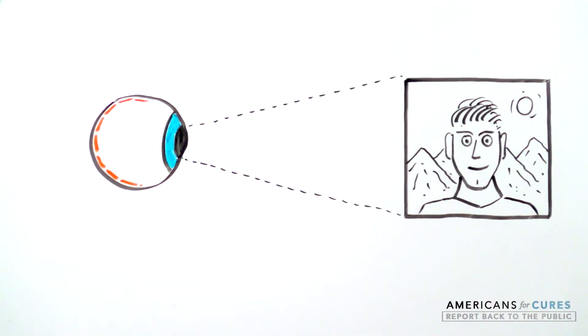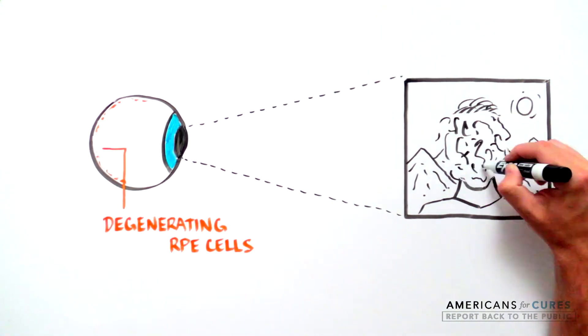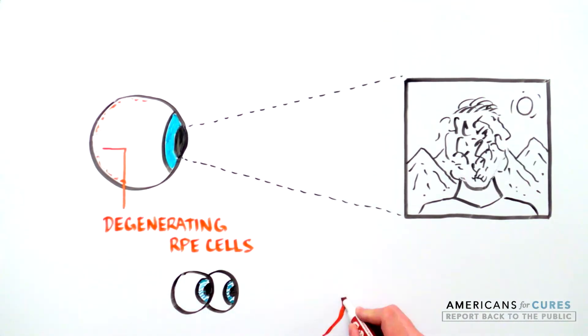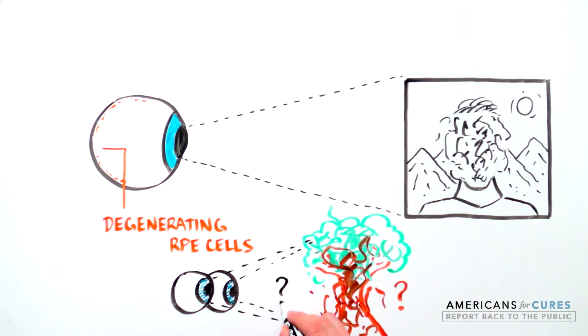Over time, patients with AMD lose high-acuity vision and see only distorted or blurry images, losing the ability to discern objects or faces in their central vision.